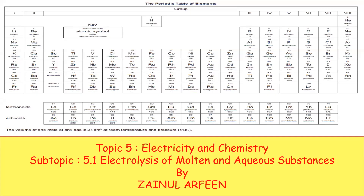The topic is electricity and chemistry. We were discussing how we do electrolysis of molten and aqueous substances. For molten substances, because they don't have any water, there is only one positive ion and one negative ion, so they move towards their respective electrodes. For aqueous substances, which consist of water, for positive ions we check the reactivity — the less reactive will move — and for negative ions we check the amount.